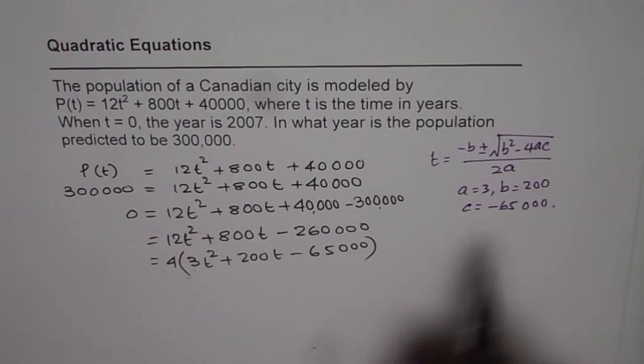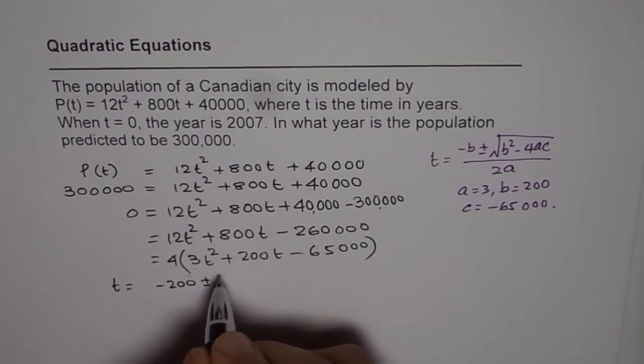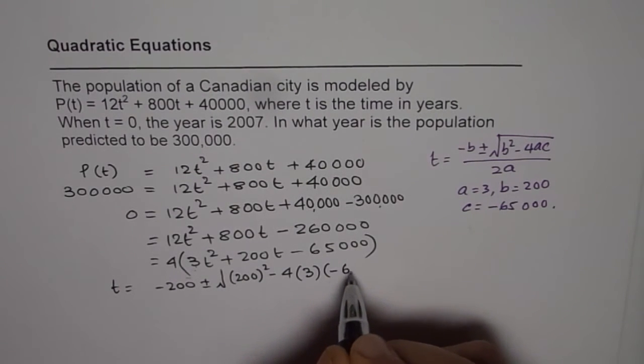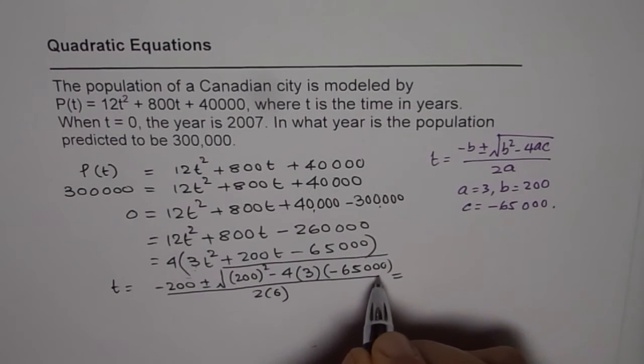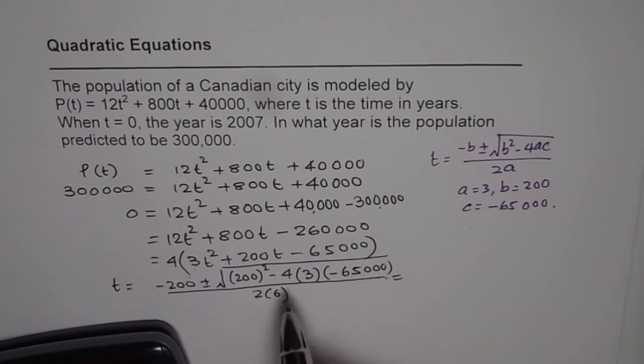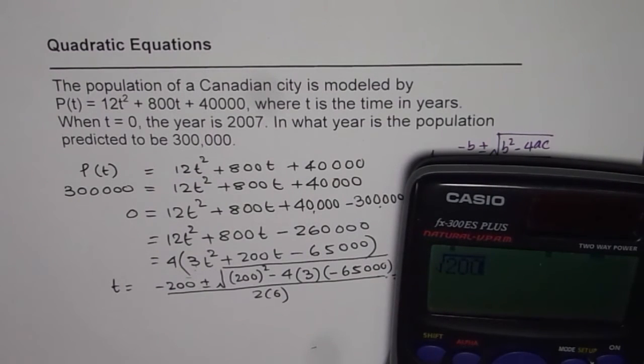So let's apply this formula and find the value of t. So what do we get here is t = -200 ± √(200² - 4(3)(-65,000)) divided by 2(3). And this value should be positive, otherwise we can't get a real answer. So let's find what is the value of this. So we'll do square root. And within square root, 200 square minus, and now minus and minus becomes plus. So let me write plus. 4 times 3 times 65,000. That gives us 905.53.